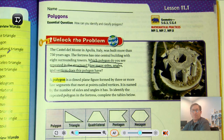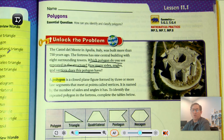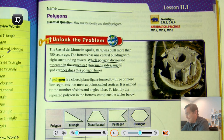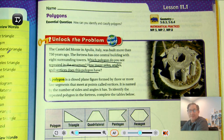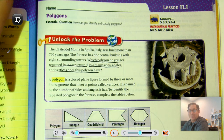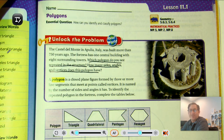A polygon is a closed, plain figure formed by three or more line segments that meet at points called vertices. It is named by the number of sides and angles it has. To identify the repeated polygon in the fortress, complete the tables below.